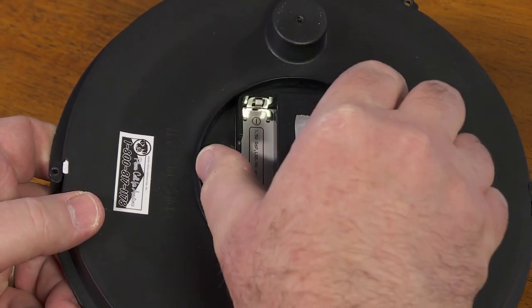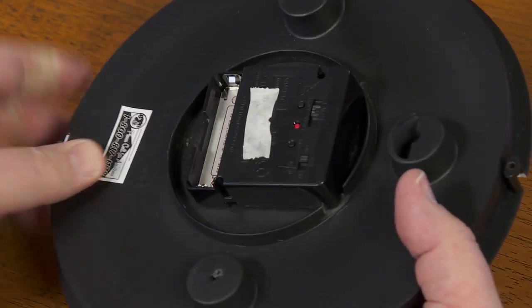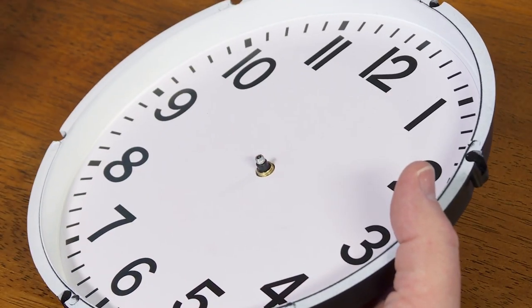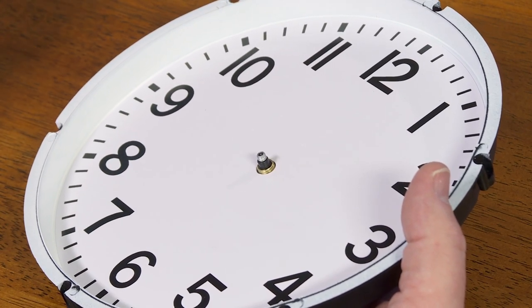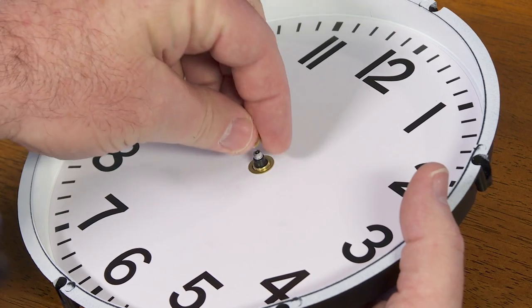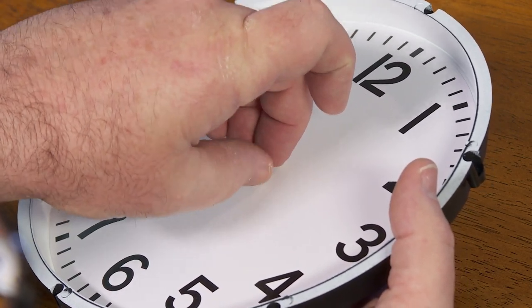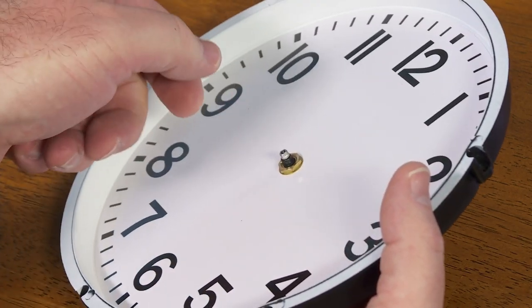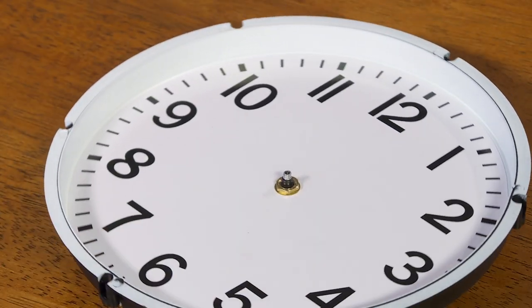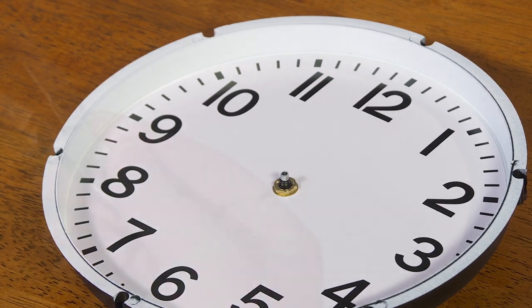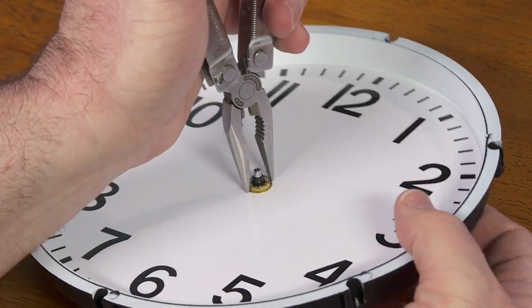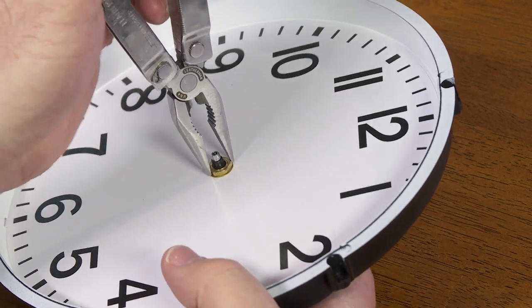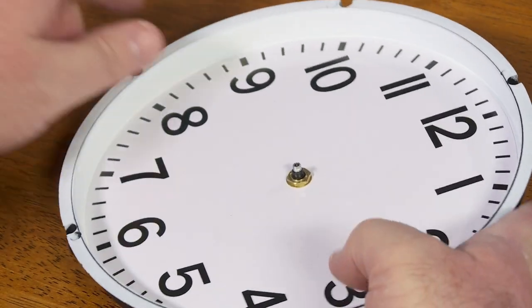Now that this motor will fit here, I'll just push it in place and then I have to install the hardware that's going to hold it to the clock. Just this nut that screws right on. I'm going to give it an extra twist with some pliers. There, it's pretty good.